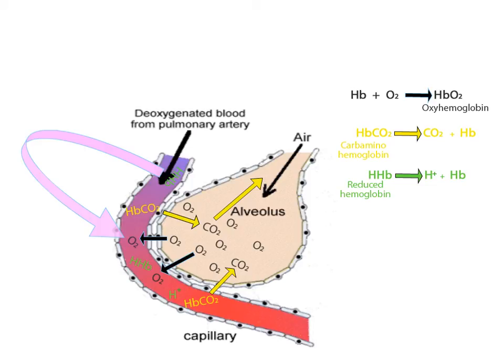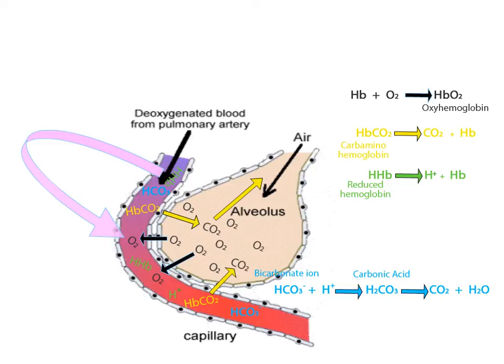If hydrogen ions continue to be released in the capillaries around the lungs, the tissue would become highly acidic. So what happens to the excess hydrogen ions? The hydrogen ions are buffered by a molecule called the bicarbonate ion. When hydrogen ions bind to the bicarbonate ion, a molecule called carbonic acid is temporarily formed. Carbonic acid quickly breaks down into carbon dioxide and water, both of which diffuse into the alveoli and are exhaled.